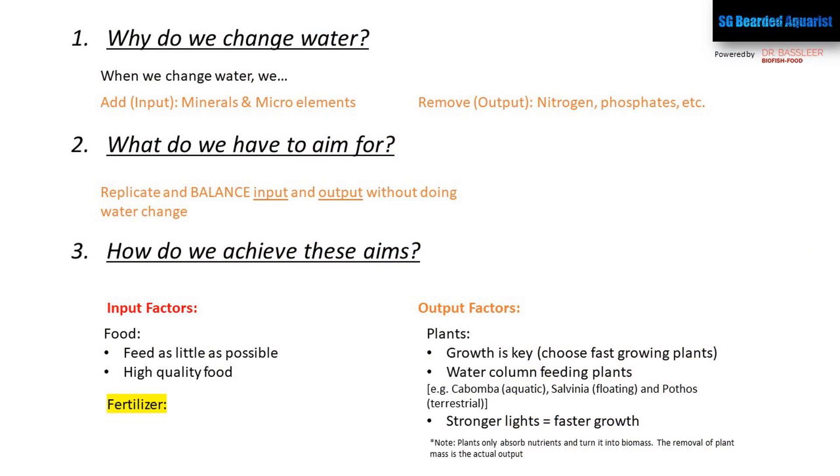The last part of the equation is fertilization. When we feed our fish, we're not just adding nitrogen and phosphates — fish food does contain some level of micro elements, but it's probably not going to be enough for plants to thrive and get the growth needed to absorb all the nutrients. Long term, you're probably going to need some fertilizers. The amount depends on what plants you use and how much growth you're getting, but a basic all-in-one fertilizer usually suffices unless you're trying to grow very demanding plants, which I wouldn't recommend for a zero water change system.